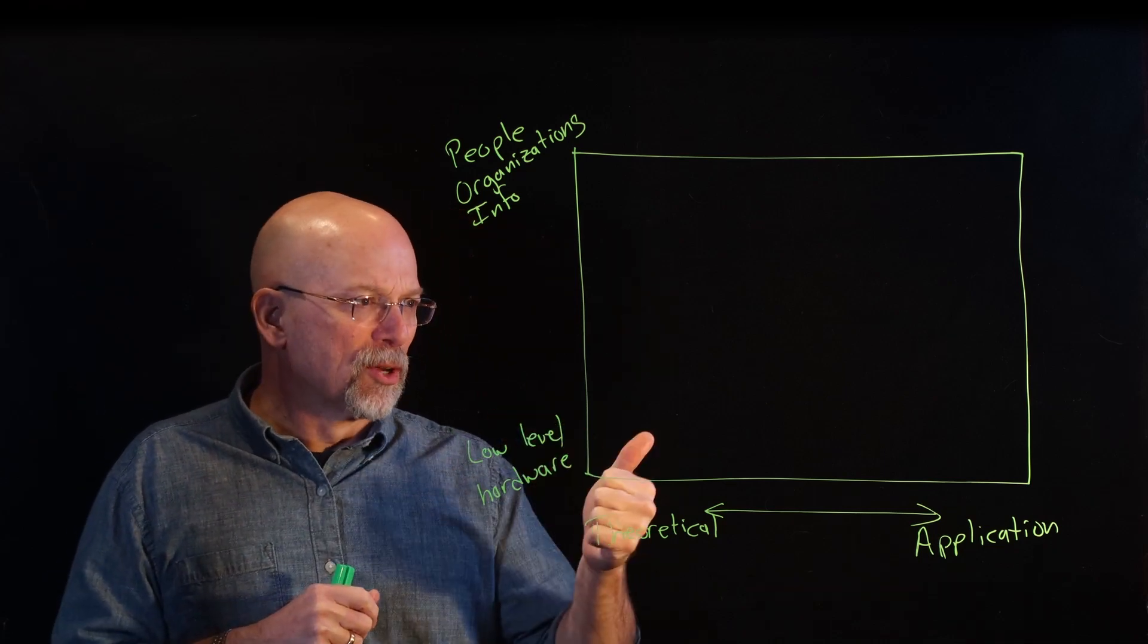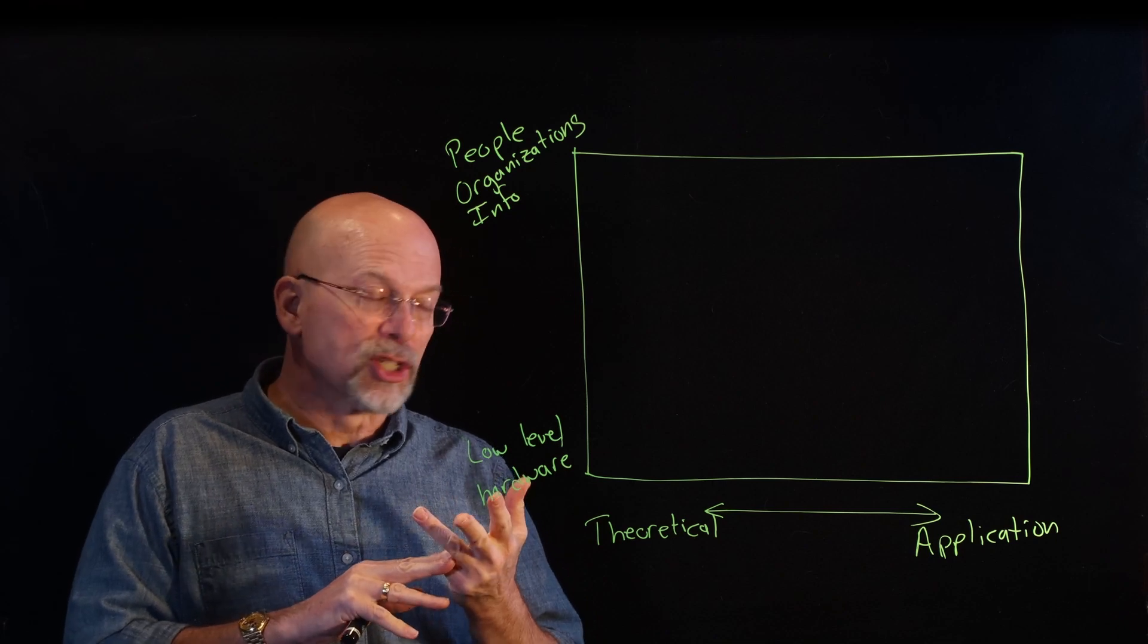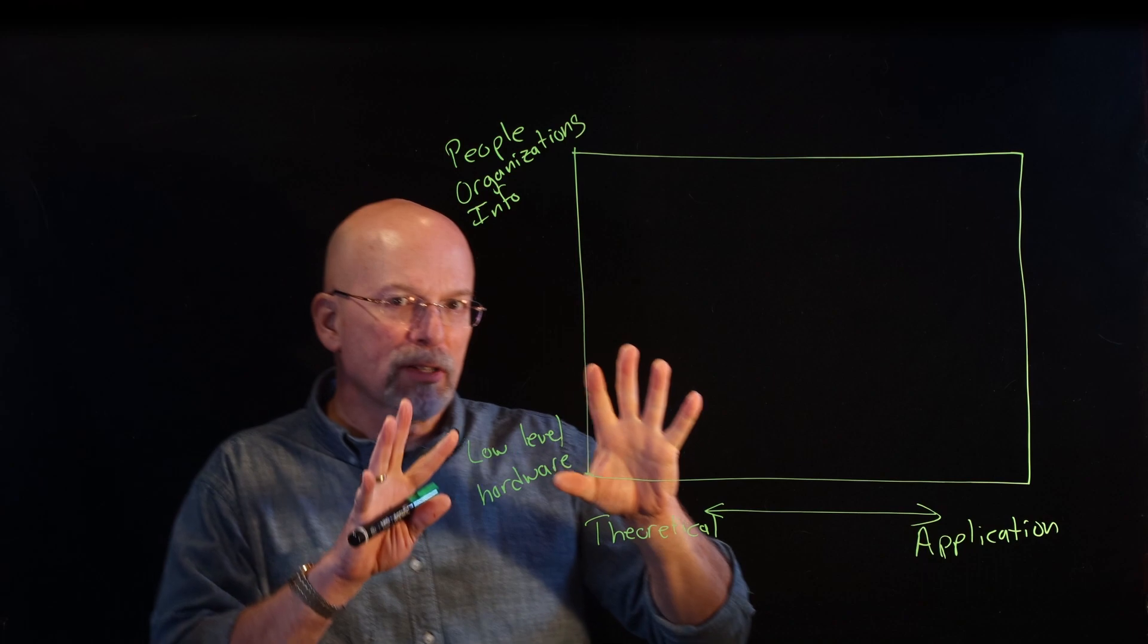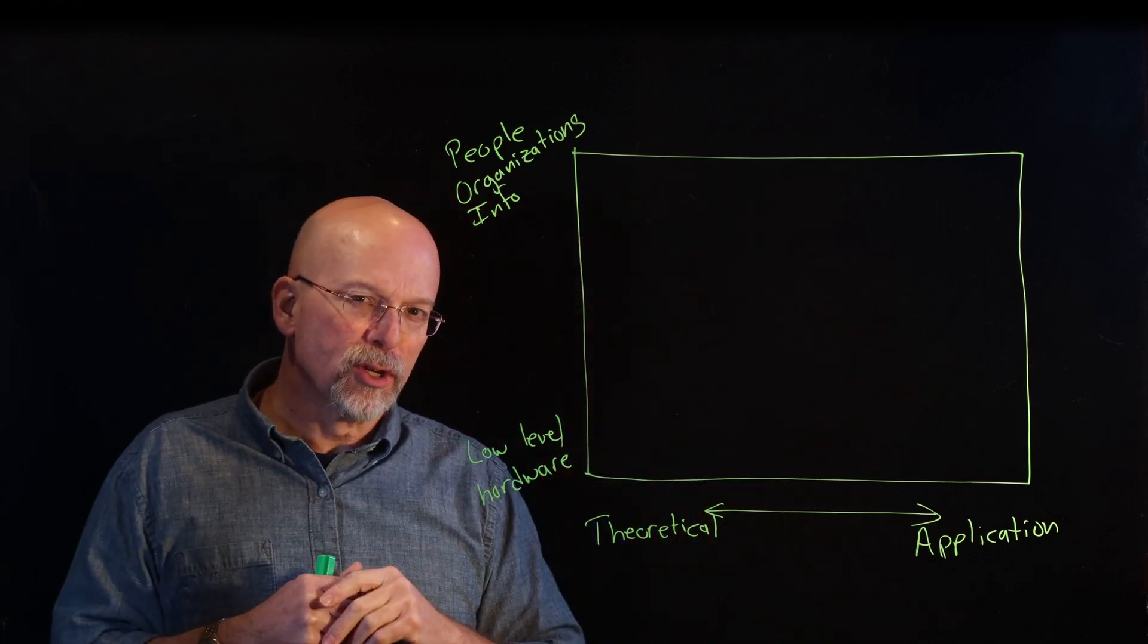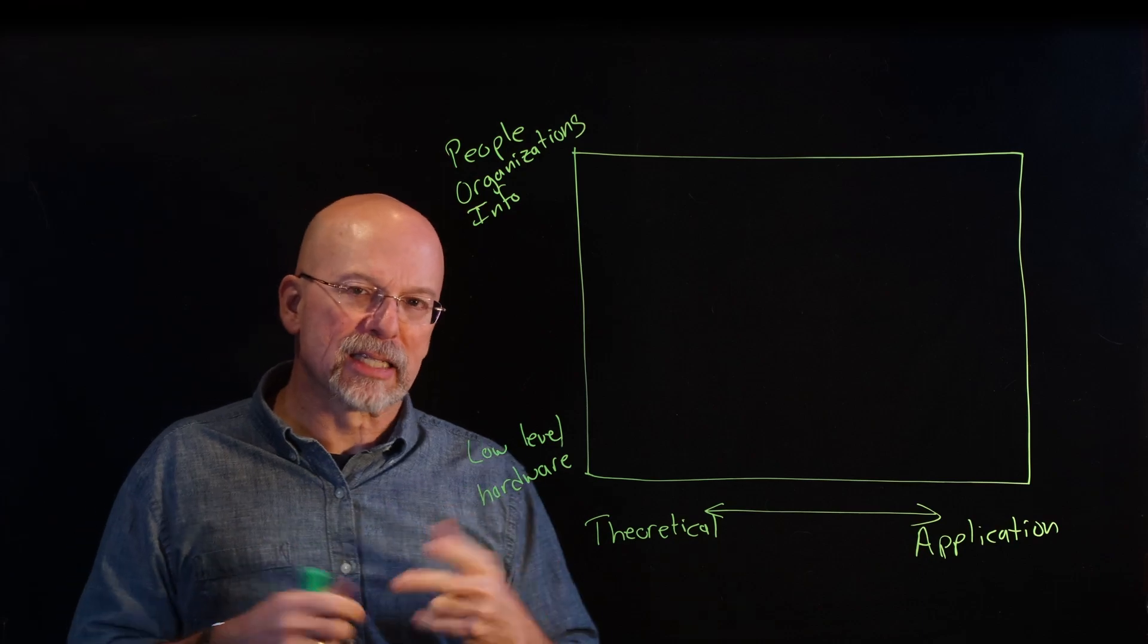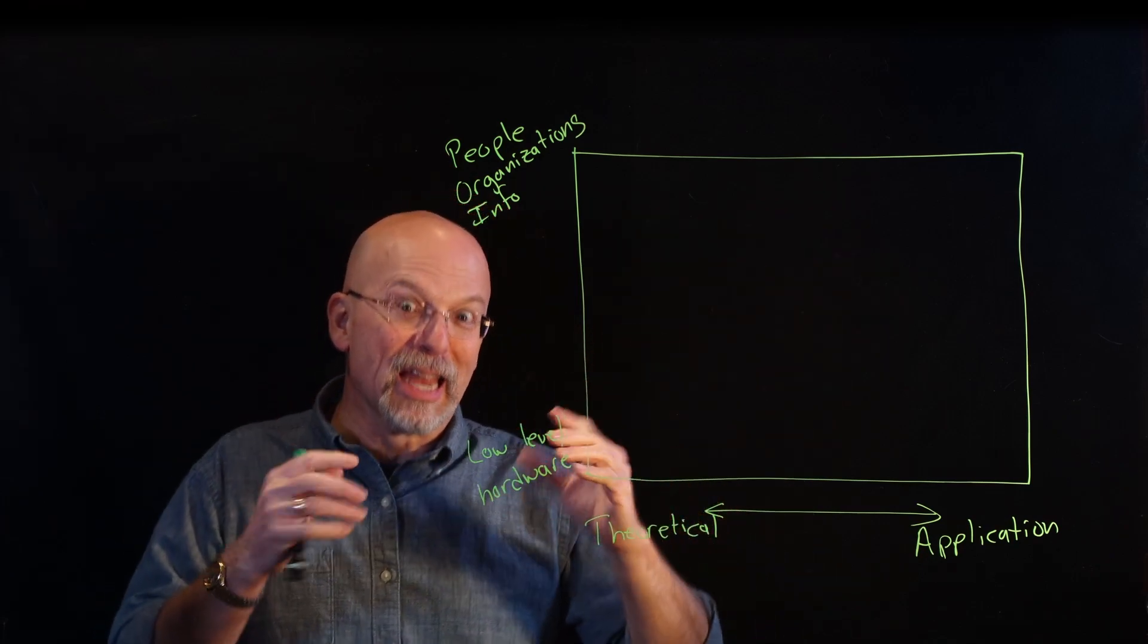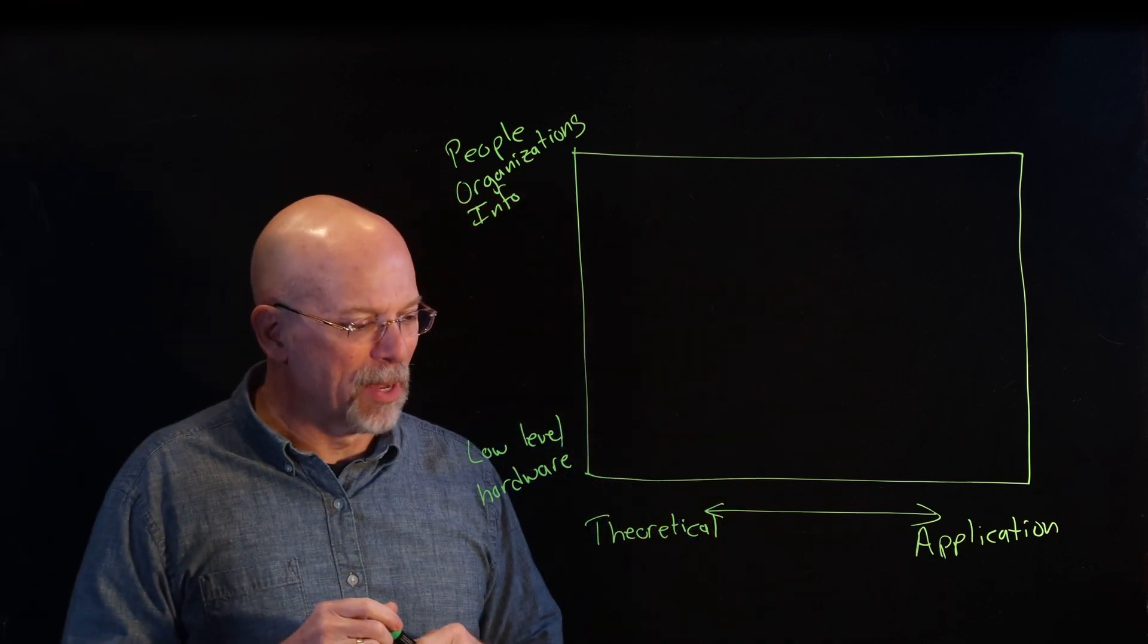Five of the disciplines, the computer science, the computer engineering, the software engineering, the information science, and the information technology, they were all part of the 2005 report when this problem space was presented. Two of the newcomers, data science and cybersecurity, really were not included. So you're actually going to get Dave's interpretation of where they fit in this problem space.